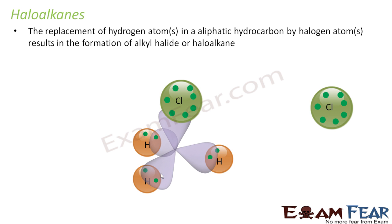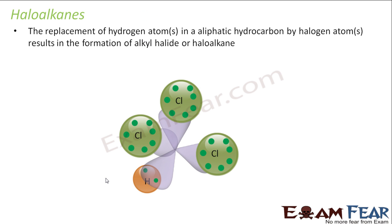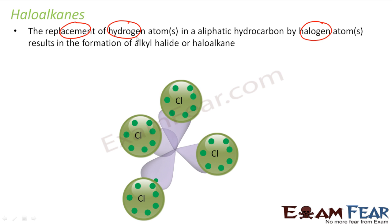You can replace more hydrogens as well. Replacing a second hydrogen gives CH2Cl2, also a haloalkane. Replacing a third gives CHCl3, also a haloalkane. Replacing the fourth hydrogen gives CCl4, again a haloalkane. So when you take any alkane and keep replacing hydrogens with halogens, what you get are haloalkanes: CH3Cl, CH2Cl2, CHCl3, and CCl4.